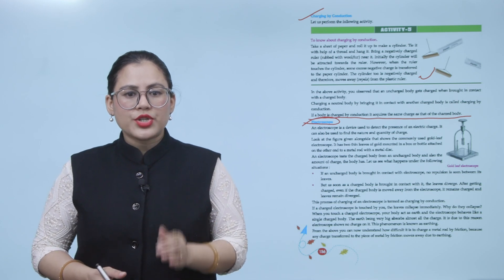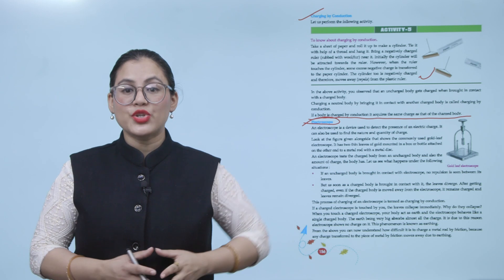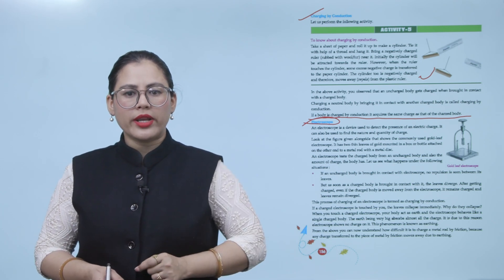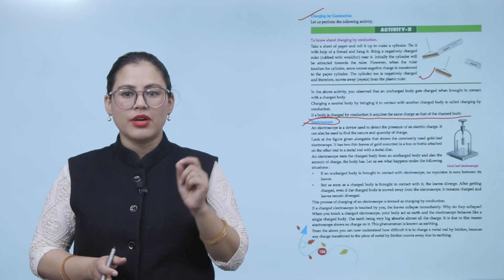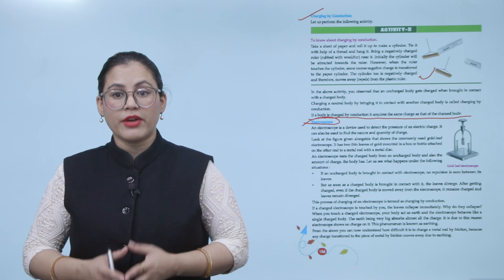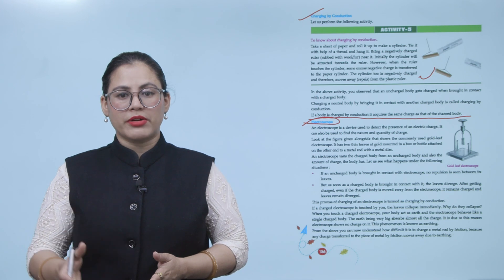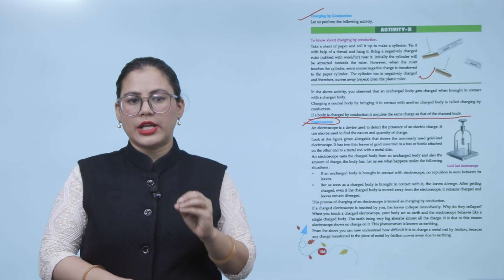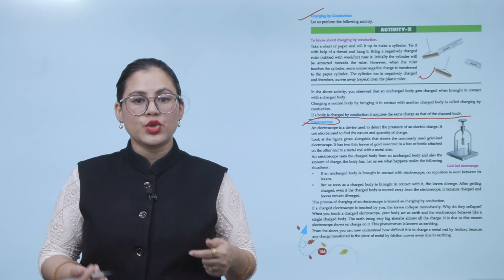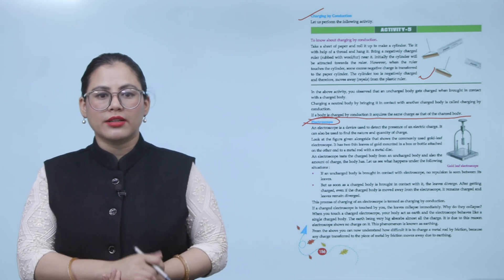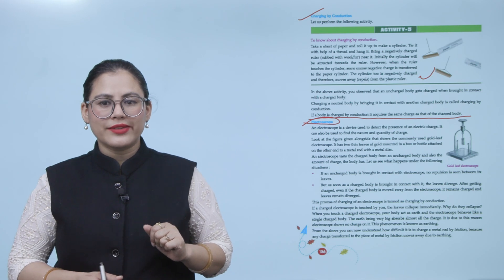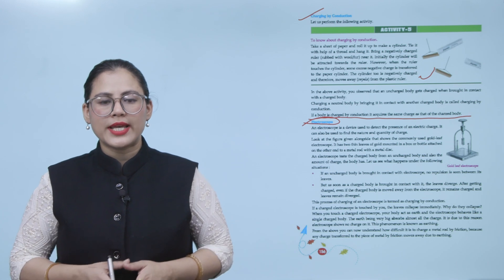If a charged electroscope is touched by you, the leaves collapse immediately. When you touch a charged electroscope, your body acts as earth and the electroscope behaves like a single charged body. The earth, being very big, absorbs almost all the charge — hence the electroscope shows no charge on it. This phenomenon is known as earthing. From this, you can understand how difficult it is to charge a metal rod by friction, because any charge transferred to the metal by friction moves away due to earthing.